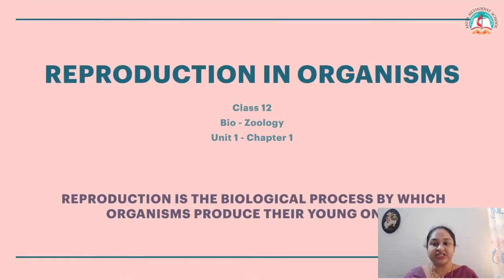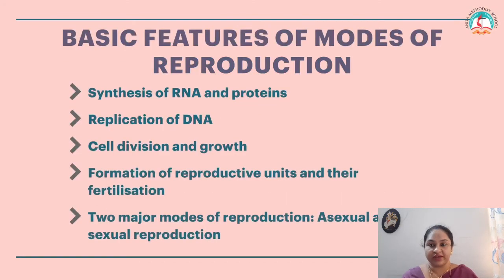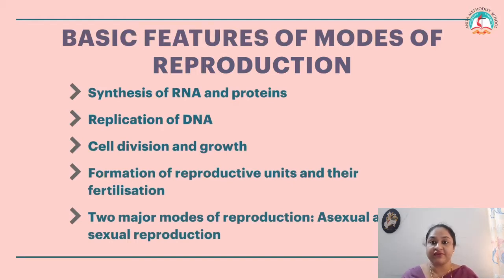Reproduction is the biological process by which organisms produce their young ones. The basic features of modes of reproduction are synthesis of RNA and proteins, replication of DNA, cell division and growth, formation of reproductive units and their fertilization. The two major modes of reproduction are asexual and sexual reproduction.